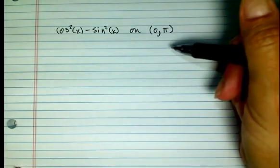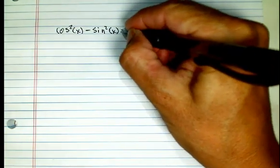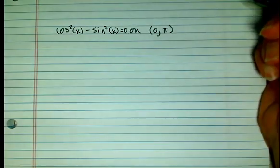Are you ready to check your work on cosine squared x minus sine squared x equals 0 on the interval 0 to pi?